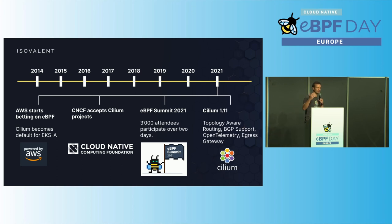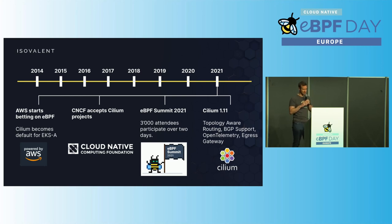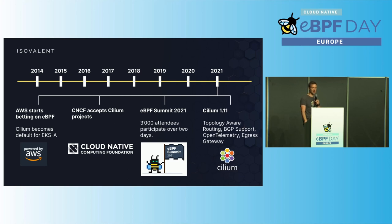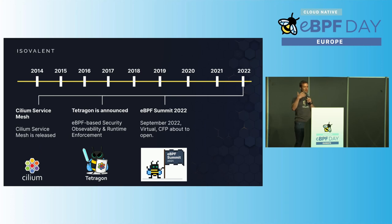In 2021, Amazon followed Google's footsteps and announced that for EKS Anywhere they would use eBPF, again with Cilium. Cilium made it into the CNCF as an incubation-level project. The second eBPF Summit was completely overrun with over 3,000 virtual attendees. Cilium 1.11 brought topology-aware routing, BGP, OpenTelemetry support, and lots more innovation.